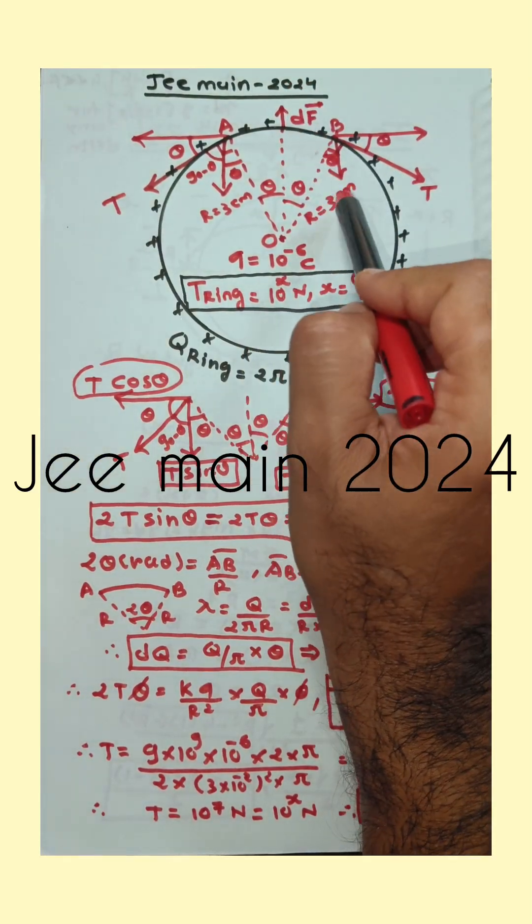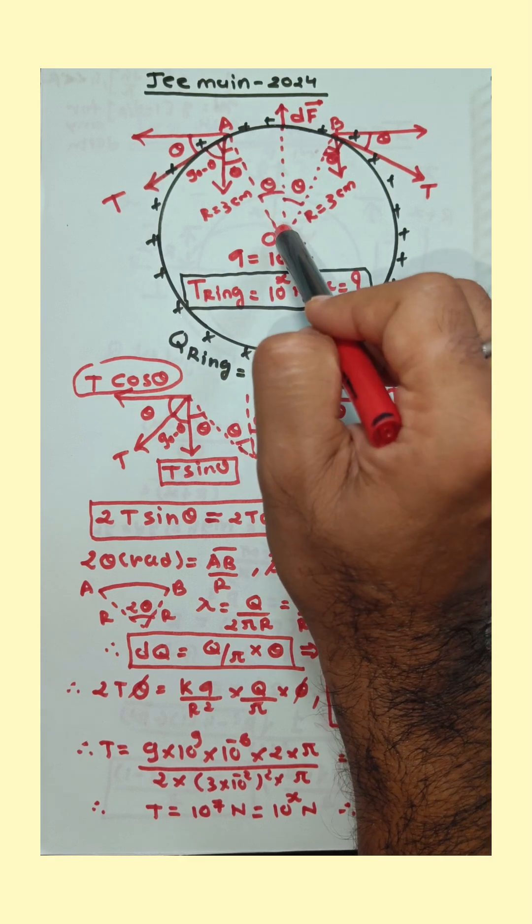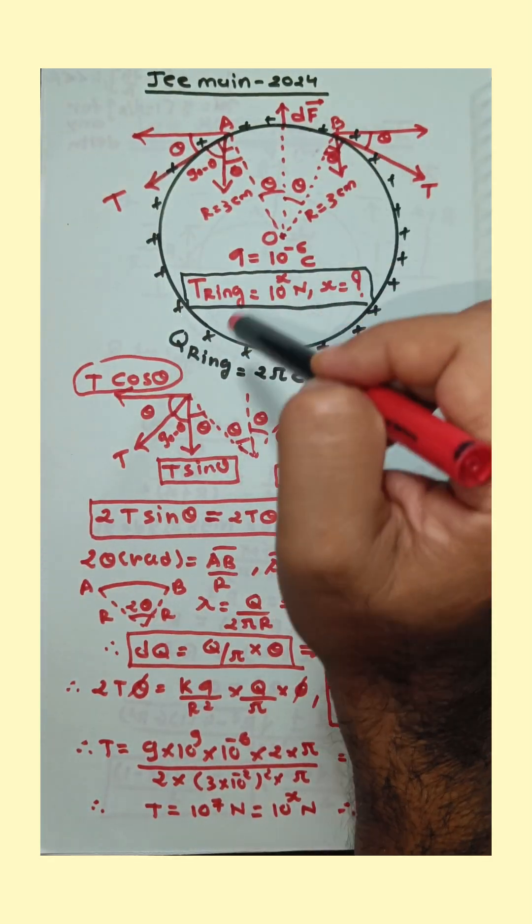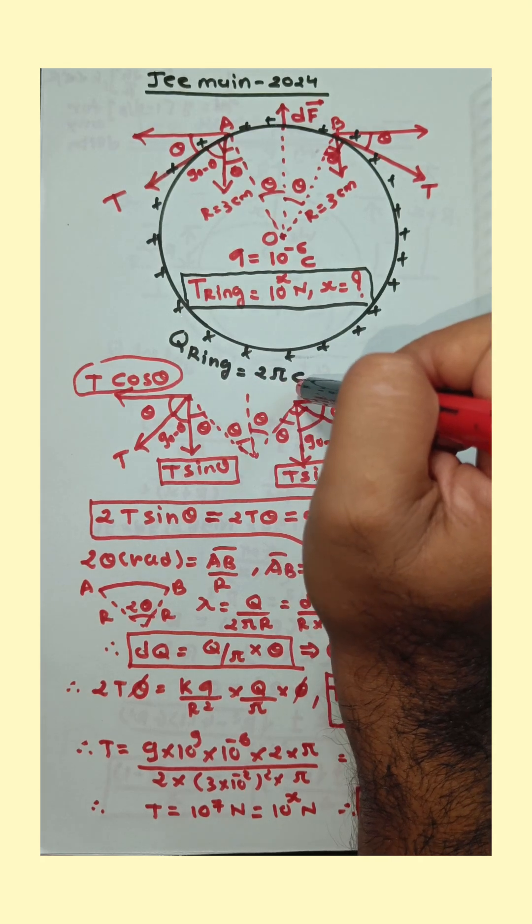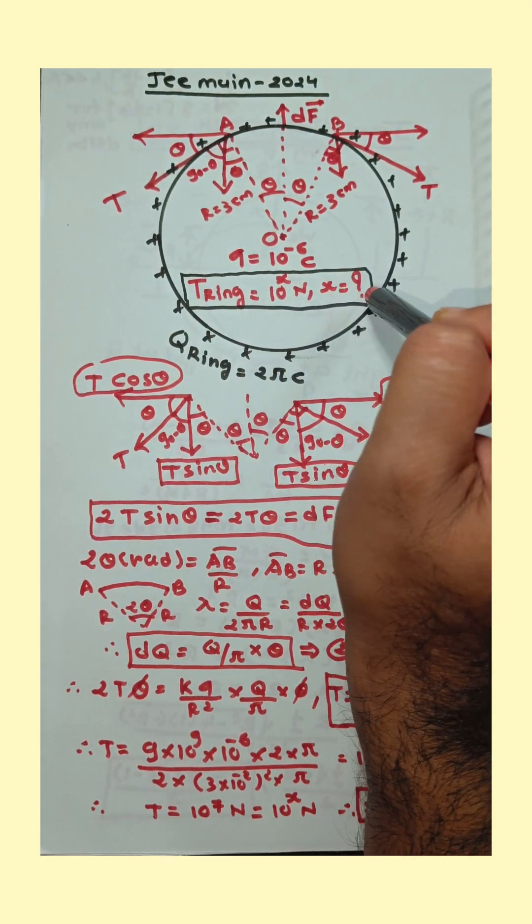JEE Main 2024 MCQ. Radius of ring is 3 cm. 10 raised to minus 6 coulombs of charge is placed at the center of ring. There is uniform distribution of charge on the ring and total charge on the ring is given 2π coulombs. Tension developed in the ring is given 10 raised to x Newton, then find out value of x.